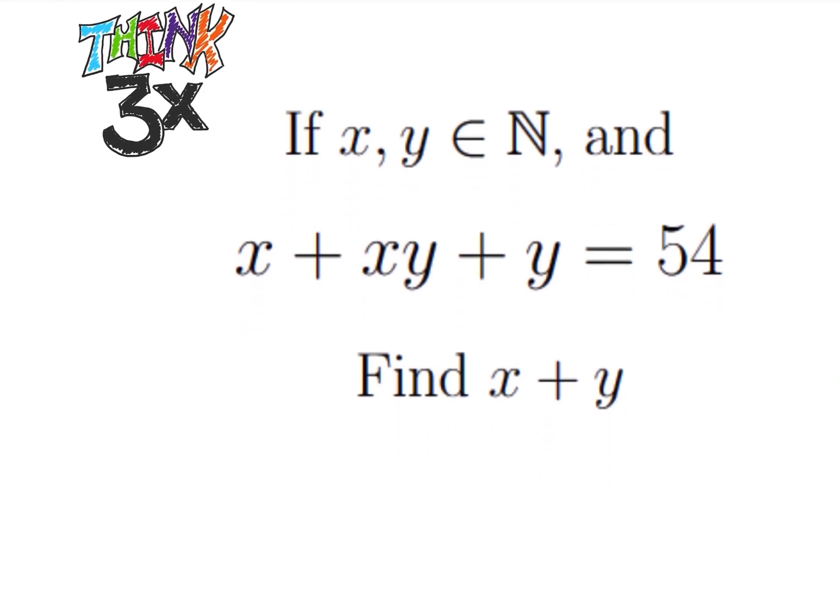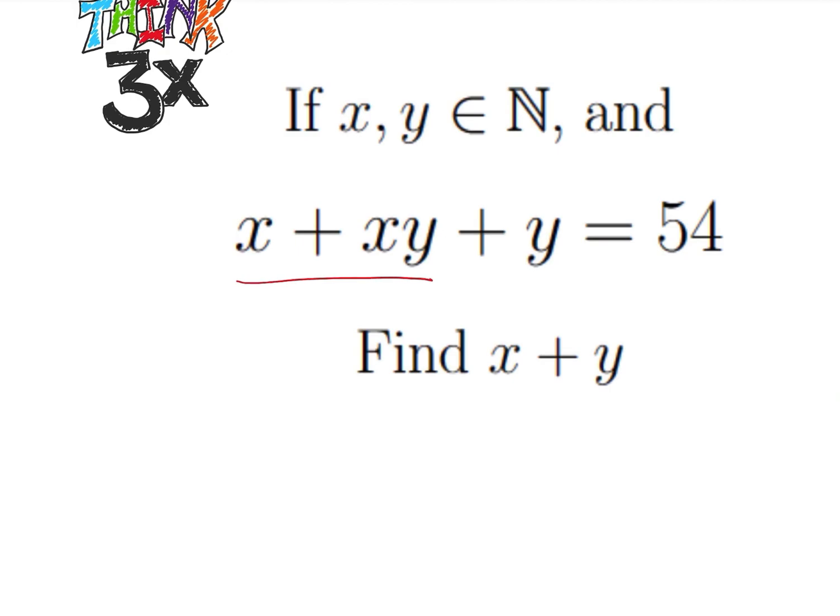So I notice that in these first two terms, I can pull out an x, and I can write this as x times 1 plus y, plus y is equal to 54. And I notice that I have this 1 plus y here. If I had another one, it would be pretty nice.